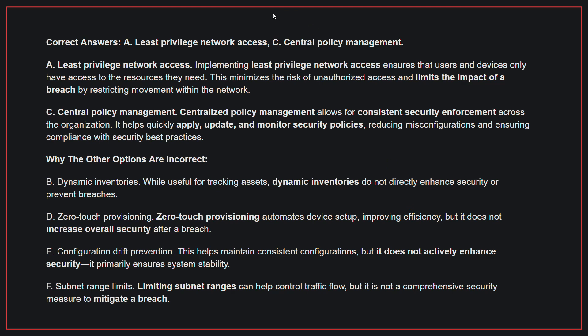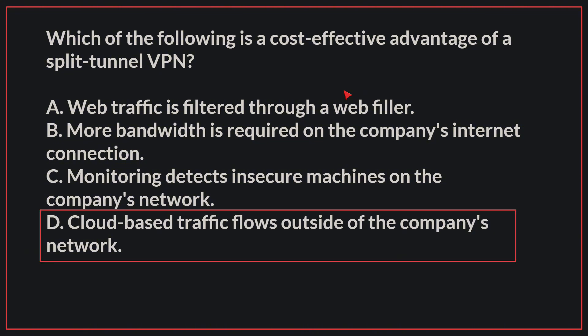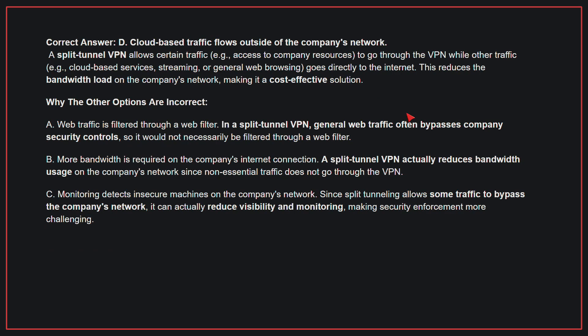Which of the following is a cost-effective advantage of a split-tunnel VPN? The correct answer is D: cloud-based traffic flows outside of the company's network. A split-tunnel VPN allows certain traffic to go through the VPN while other traffic goes directly to the internet, reducing the bandwidth load on the company's network, making it a cost-effective solution.